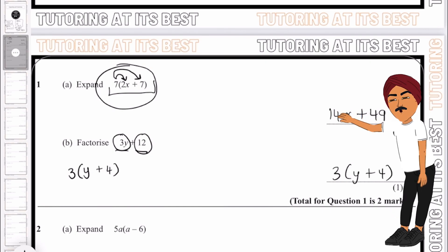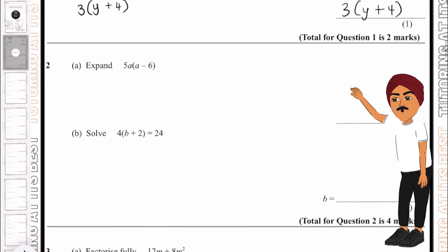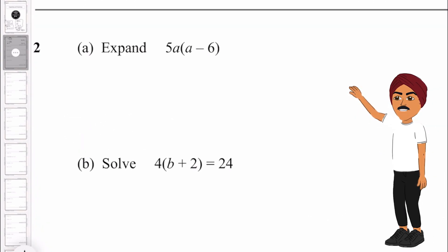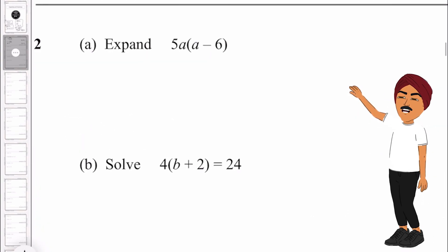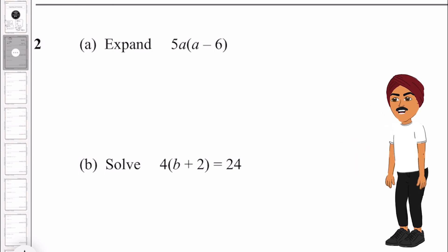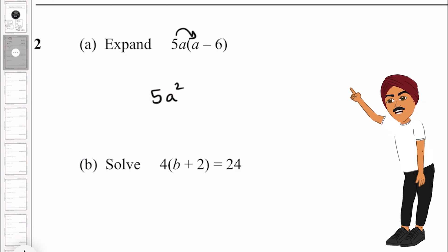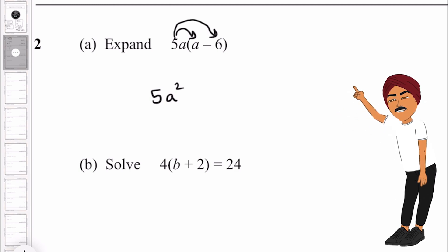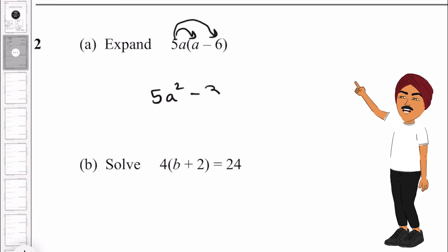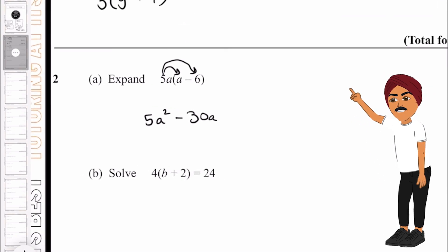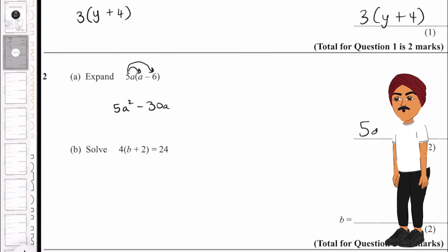Let's move to 2a. When expanding, we have 5a times a which is 5a squared, because we have two a's, and 5a times minus 6 which gives minus 30a. So that's 5a² − 30a.